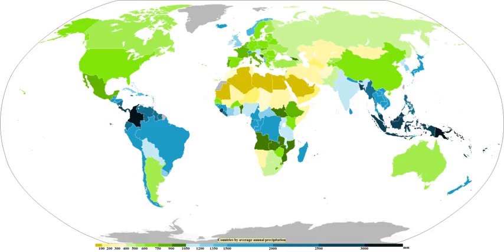The main ways water vapor is added to the air are: wind convergence into areas of upward motion, precipitation or virga falling from above, daytime heating evaporating water from the surface of oceans, water bodies or wet land, transpiration from plants, cool or dry air moving over warmer water, and lifting air over mountains.